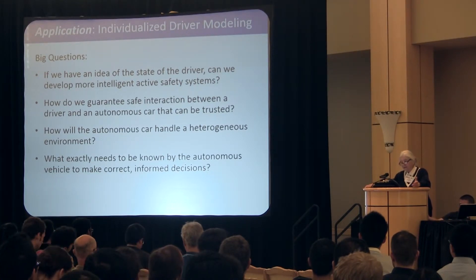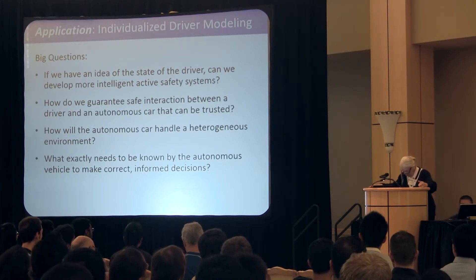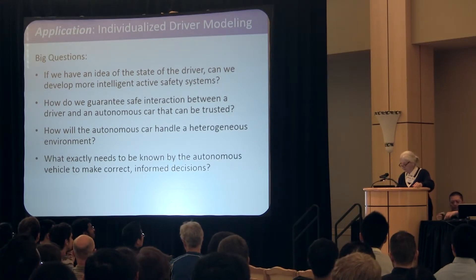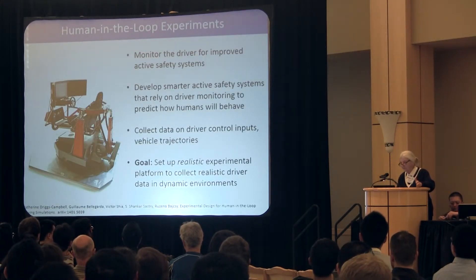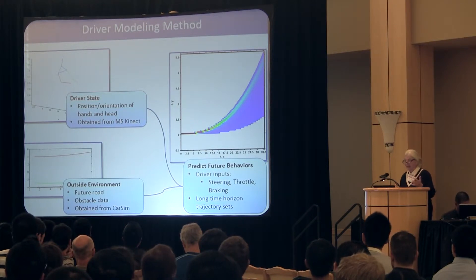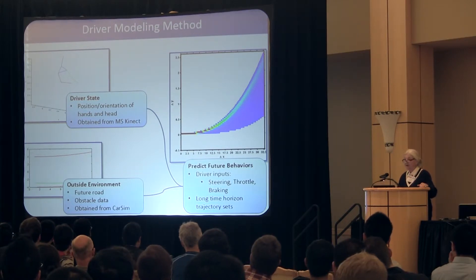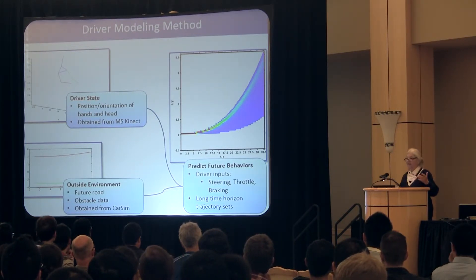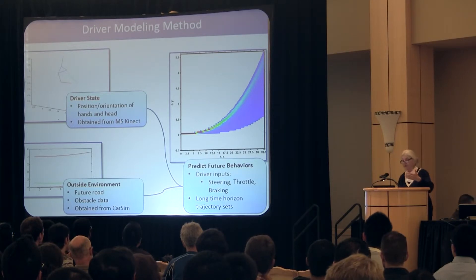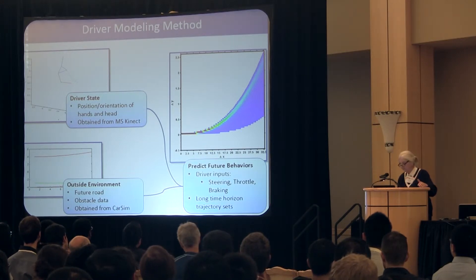How will the autonomous car handle a heterogeneous environment? What exactly needs to be known by the autonomous vehicle, et cetera? So we have a simulator. I will go quickly through this since I have eight minutes. You can image the driver and you can detect whether the driver, at least physically, is distracted — whether you are texting in the car and so forth — and switch the control to the autonomous car when the driver is distracted, and then give it back.